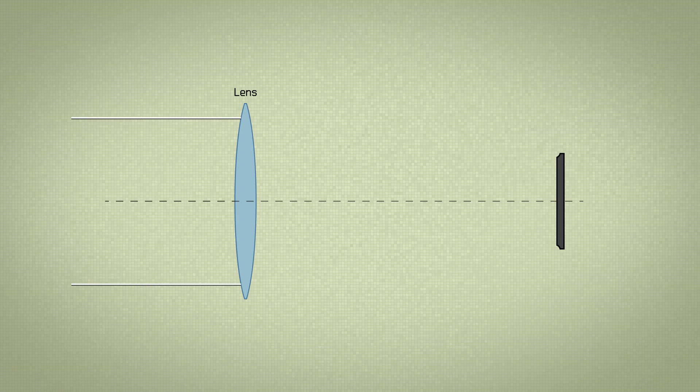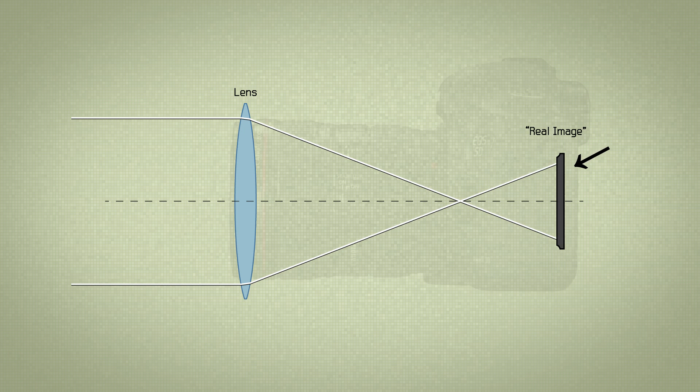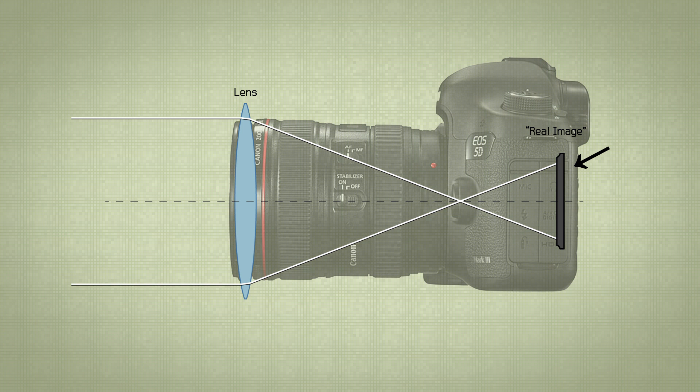Light rays enter the lens on the front and are bent, or refracted, so that they appear sharp or focused as a so-called real image here. This is where the image sensor of a camera resides, or the gate with the film negative in an analog camera.